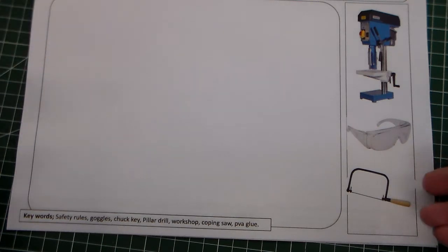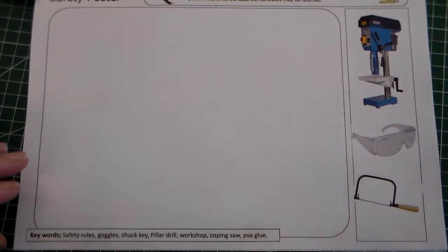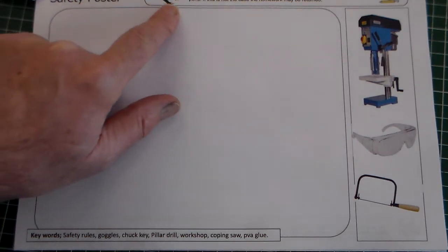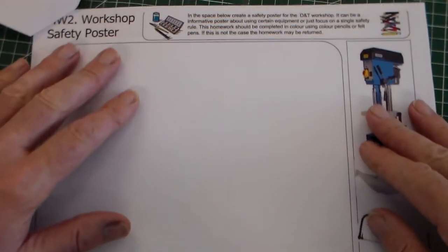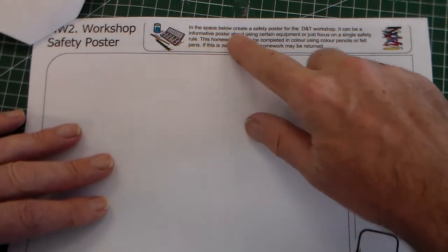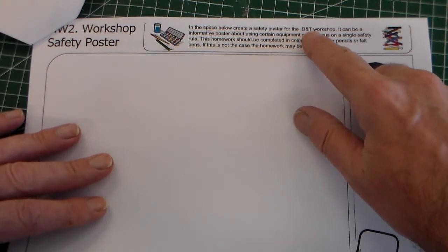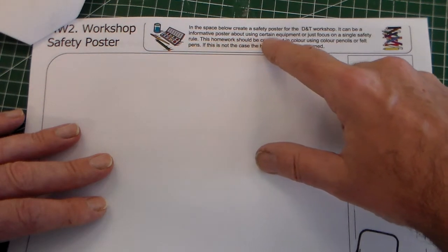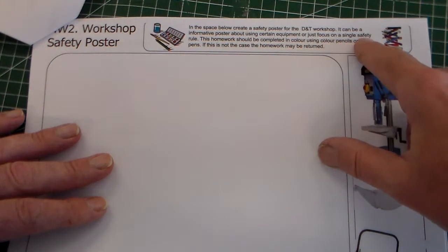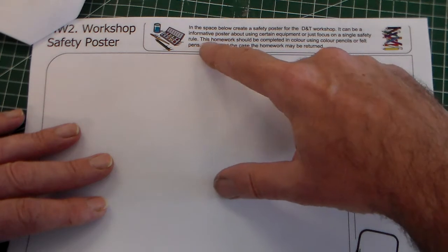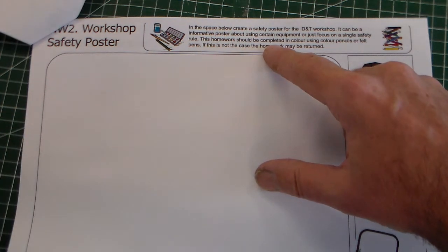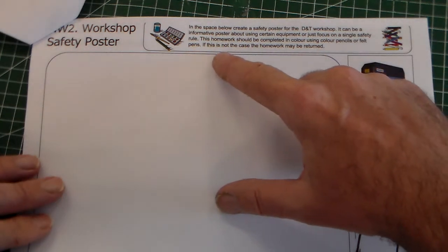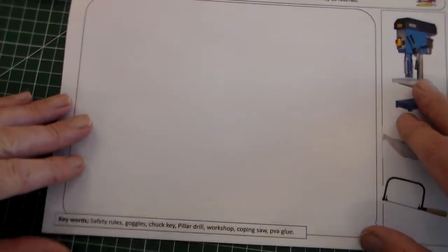Now we're going to look at homework 2, the safety poster. At the top here it says in the space below create a safety poster for the design and technology workshop. It can be an informative poster about using certain equipment or just focus on a single safety rule. This homework should be completed in colour using colour pencils or felt pens. If this is not the case the homework may be returned.